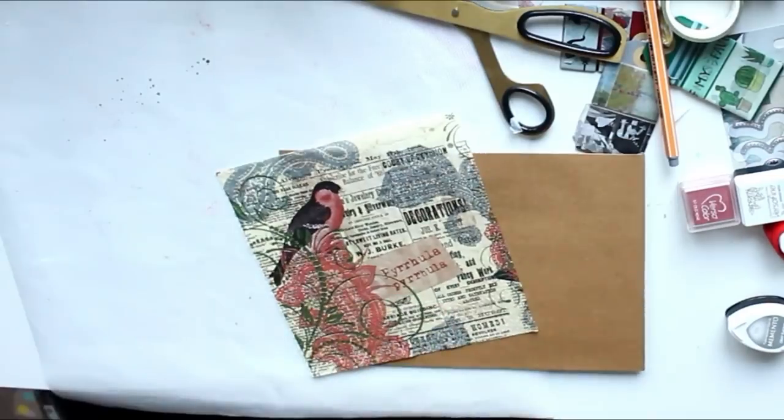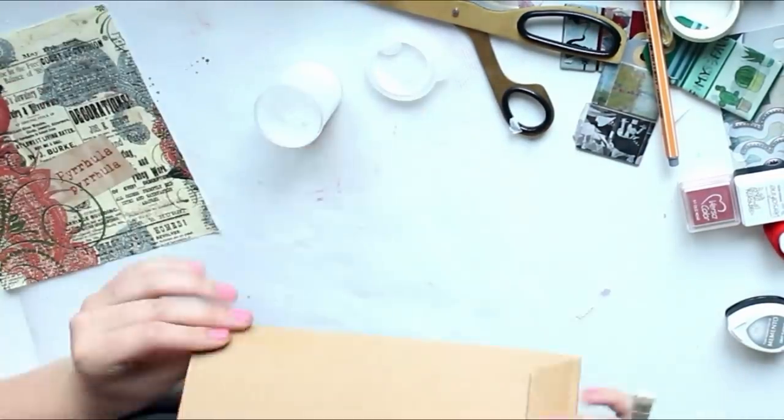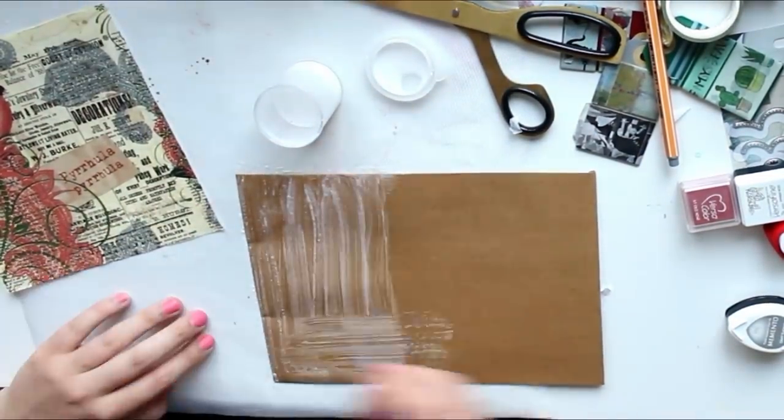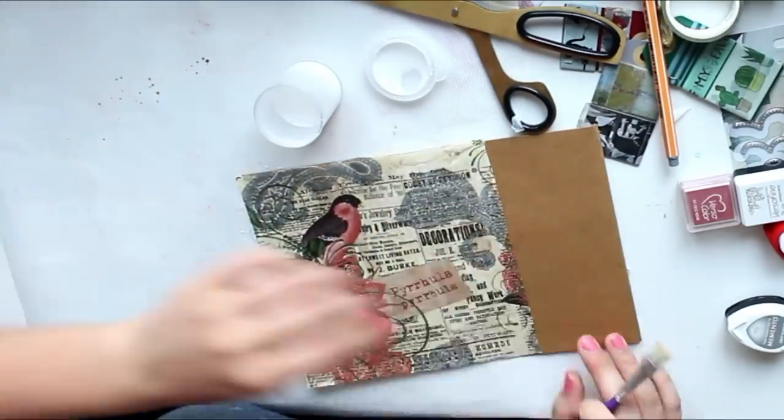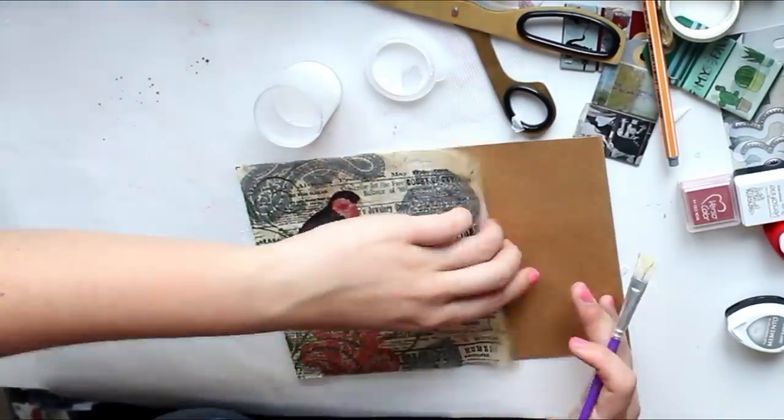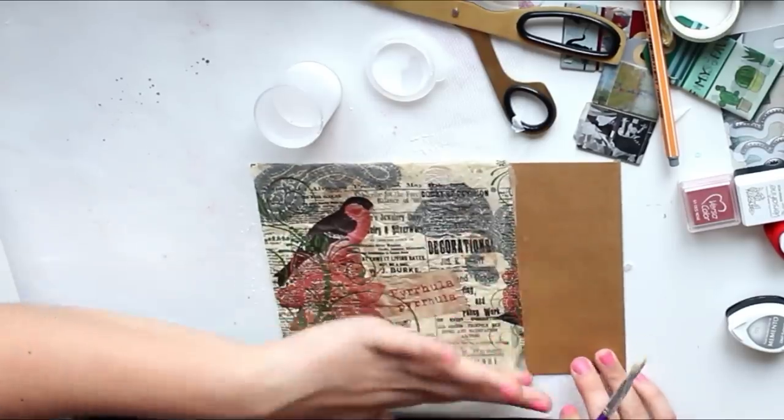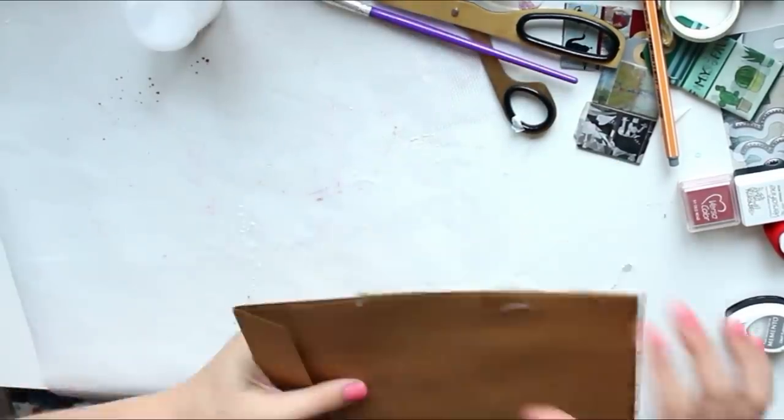For starters we're using a decoupage glue to glue down the top half or the top sheet of that napkin. I already explained this in the previous decoupage video, but for decoupage glue you use two-thirds glue, one-third water.